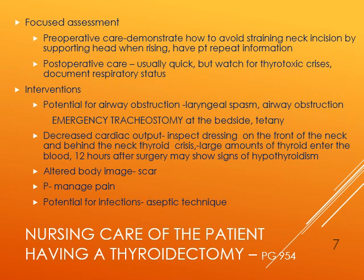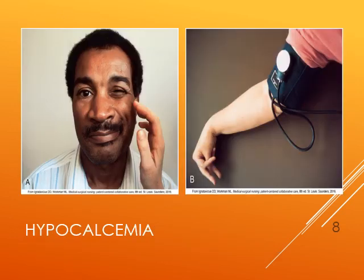After thyroidectomy, patients may have an altered body image from the scar in the neck/throat area - it will be visible unless they wear turtlenecks. Manage their pain after surgery. After any invasive procedure, there's always a risk for infection, so use aseptic technique. On page 956, thyroid crisis or thyroid storm is discussed again - it can develop when large amounts of thyroid hormone enter the bloodstream during surgery. Also, note the picture in your book: hypocalcemia signs include Chvostek's sign - tapping the facial nerve causes a twitch - and Trousseau's sign - pumping up a blood pressure cuff causes the hand to curl and jerk. You can Google these to see what they look like.